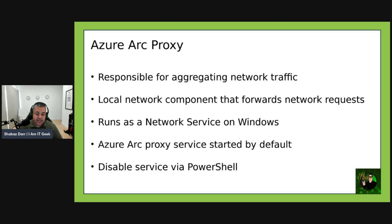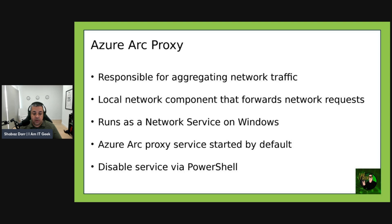The Azure Arc proxy service is responsible for aggregating network traffic from the Azure connected machine agent services and extensions, and deciding where to route that data. If you're using the Arc gateway — currently in limited preview — to simplify your network endpoints, the Azure Arc proxy service is a local component that routes network requests via the Arc gateway instead of the default route. It runs as a network service on Windows and as a standard user account called 'arc proxy' on Linux. Prior to connected machine agent version 1.51, this service was disabled by default.